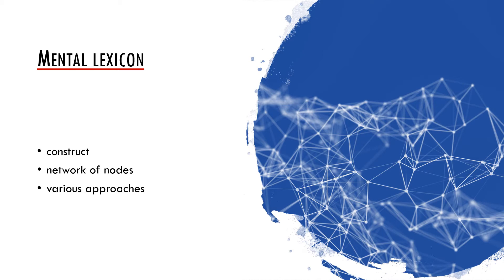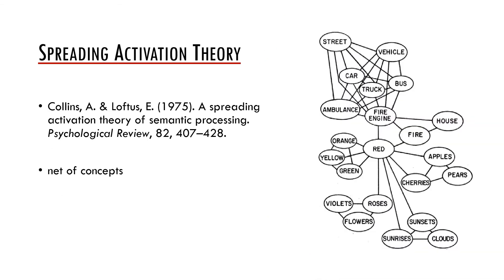It also means that some approaches do not accept mental lexicon as a sensible part of their theory. One of the first models of mental lexicon was part of the spreading activation theory which was proposed by Alan Collins and Elizabeth Loftus in the 1970s.